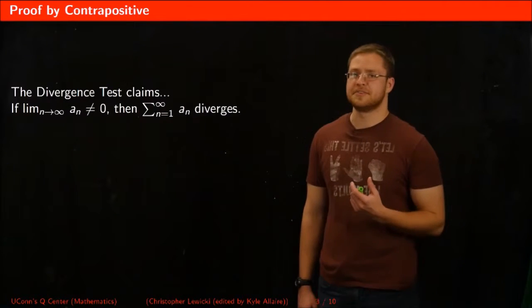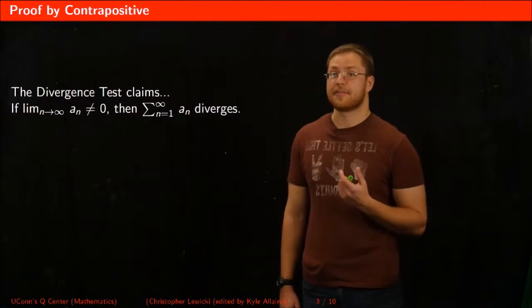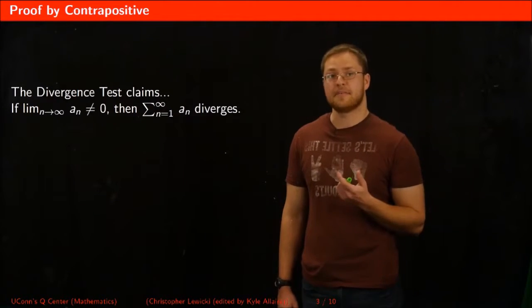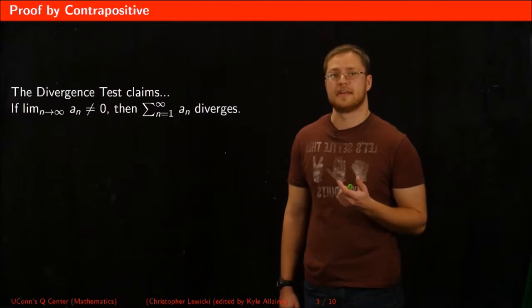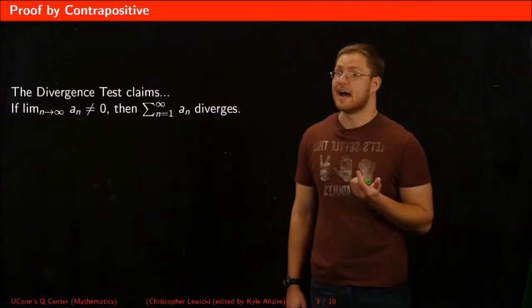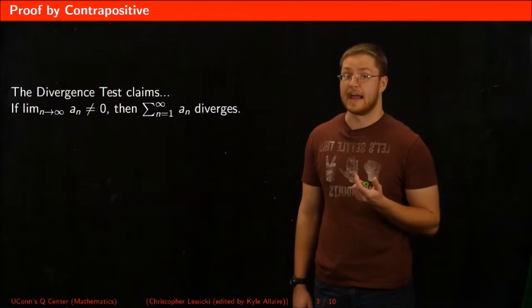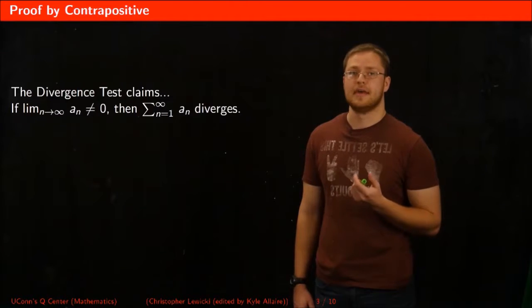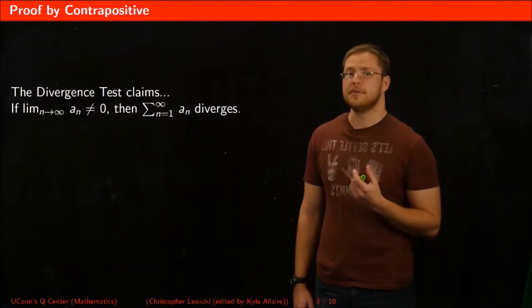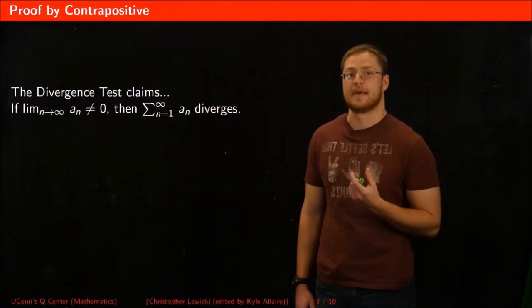First, let's take a look at what the divergence test says. It says if the limit as n goes to infinity of a sequence a_n is not equal to zero, then the series of a_n diverges. In order to prove this, I'm going to prove something called the contrapositive to this statement.